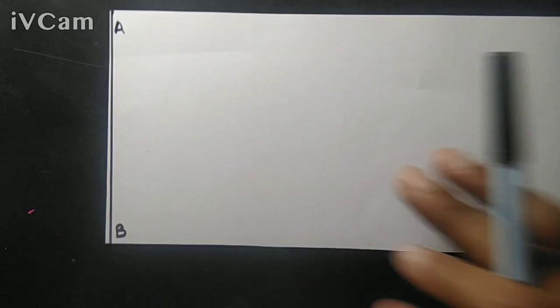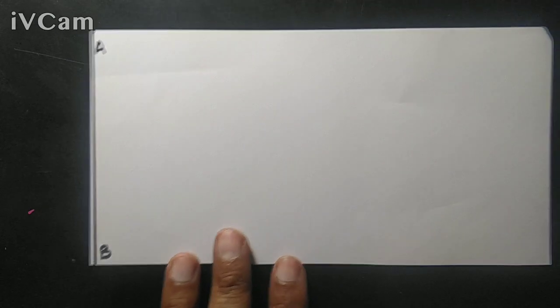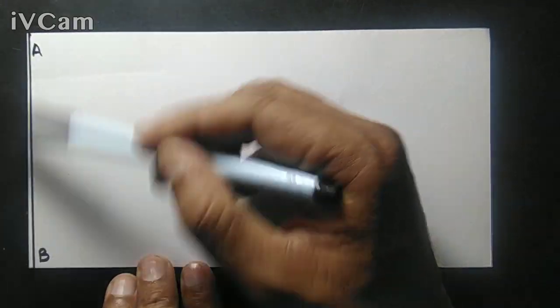For that purpose, we need a rectangular strip of paper. So we have a rectangular strip of paper. Let this length be AB and we want to use AB as the base of an equilateral triangle.